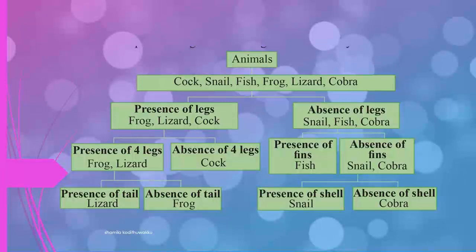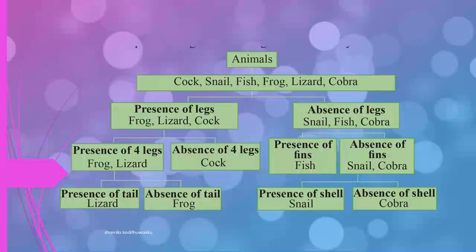On the other side, snail, fish, and cobra can be divided into two parts: presence or absence of fins. Fish has fins, but snail and cobra have absence of fins. Then snail and cobra are divided by presence or absence of shell. Snail has presence of shell; cobra has absence of shell.